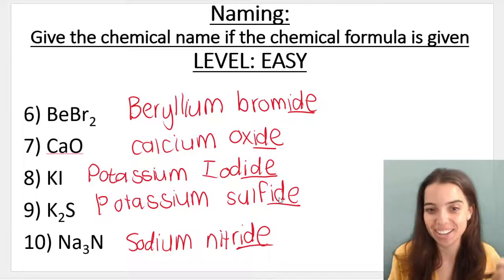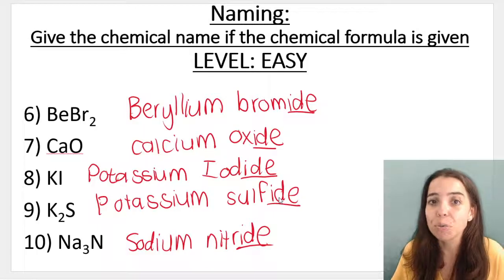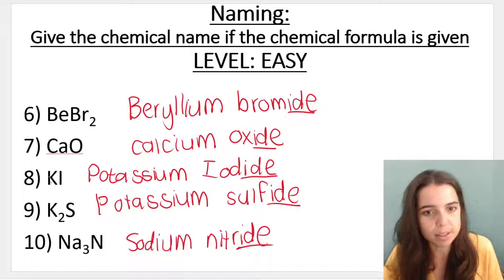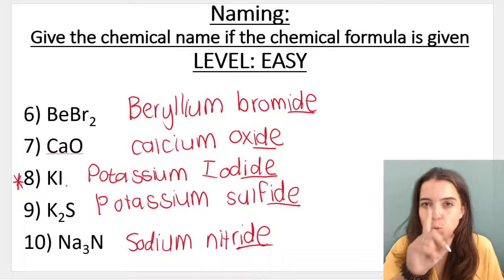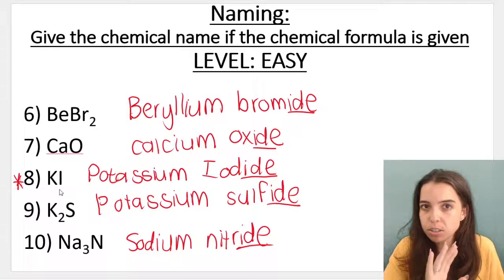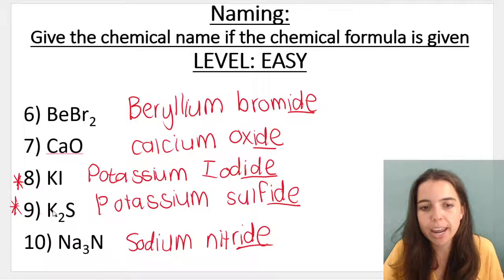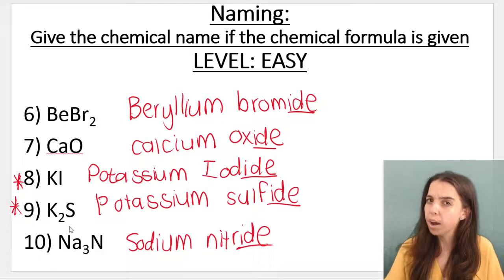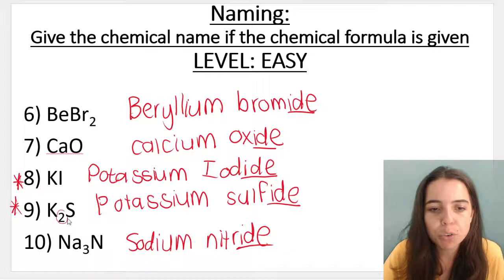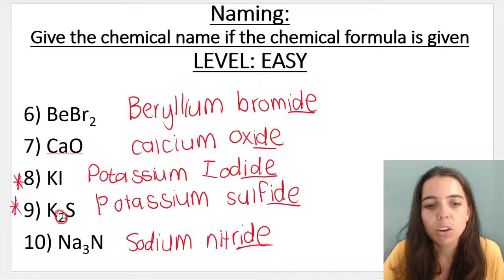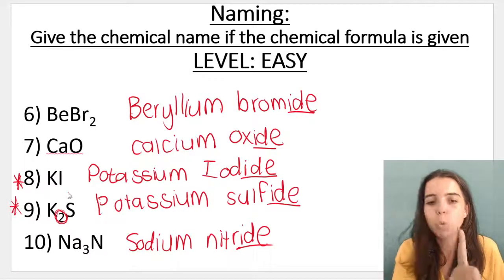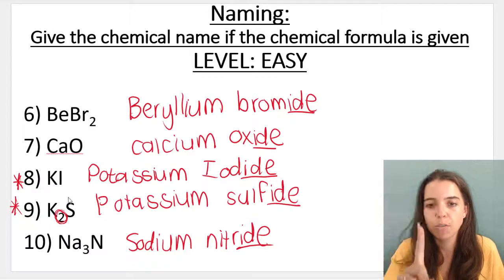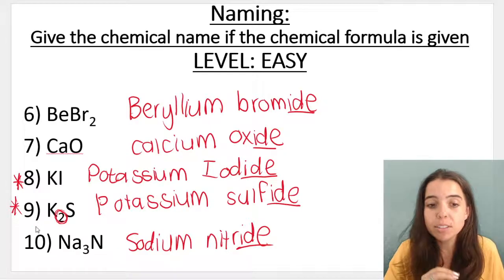Now before I leave you for this video, I just want to point out something. In this example number eight, we've got potassium, but it's one potassium, right? Look at example nine - we've got K₂. Now why? Remember, these numbers refer to how many of those atoms I have in that compound. So in potassium iodide, it's one potassium atom for every one iodine - one to one.